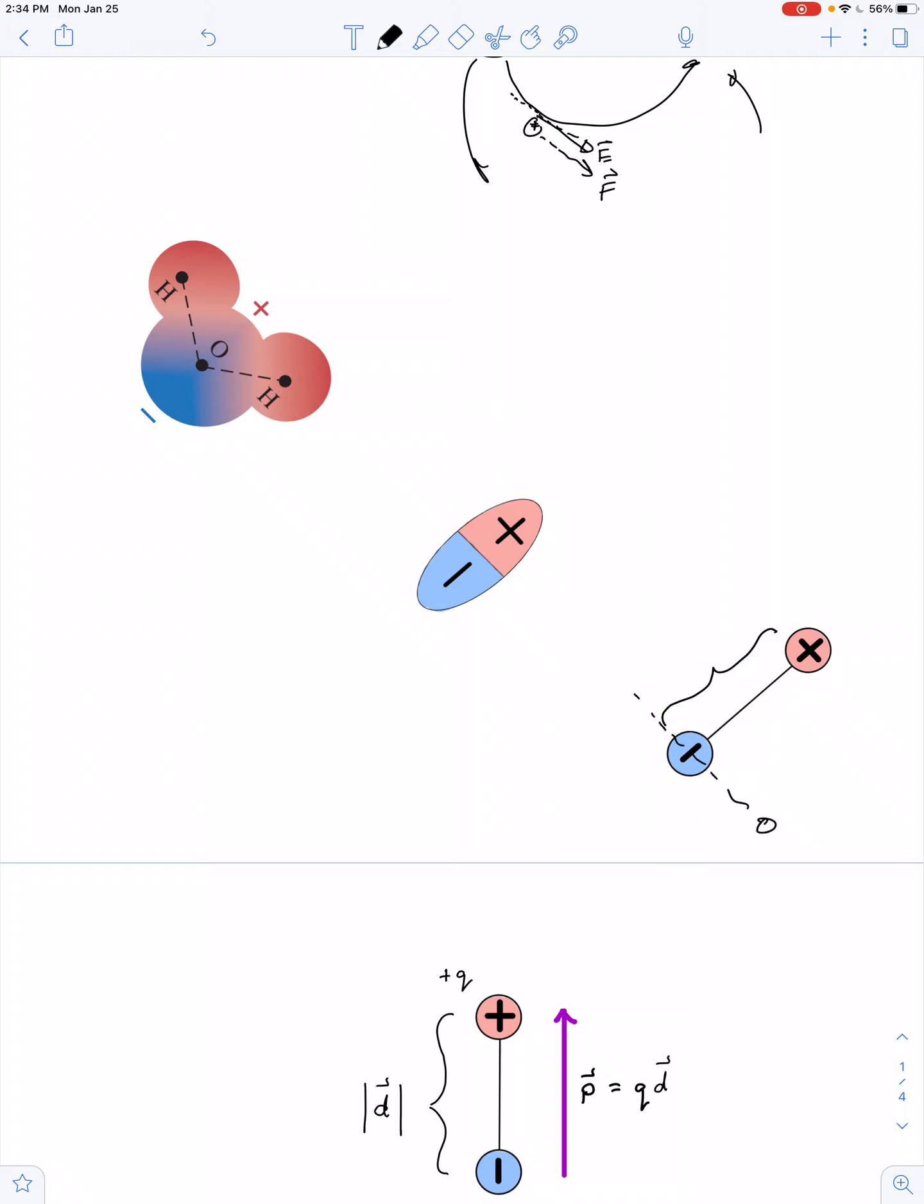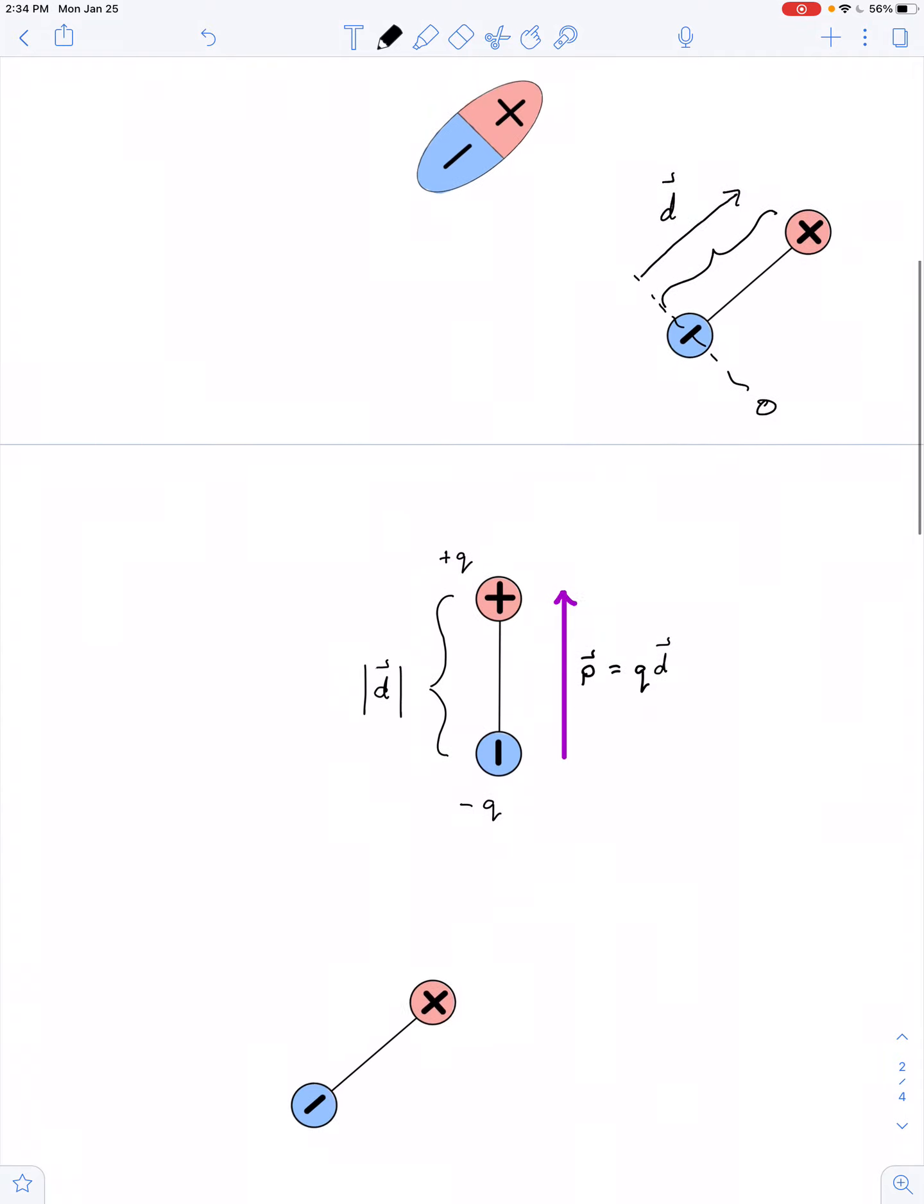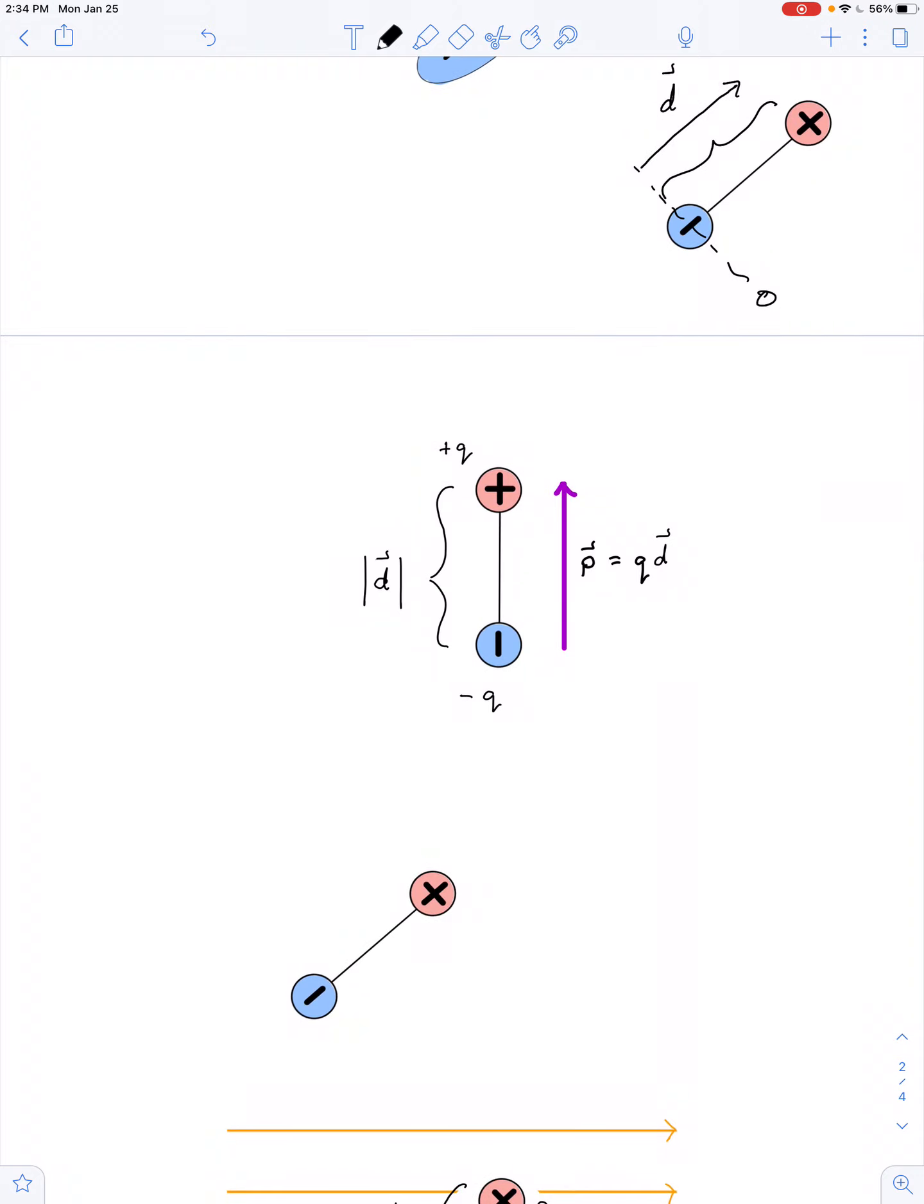And we can even simplify that model more and show that there's a definite overall length or dimension to that polar molecule. So we'll place an origin at the negative charge and create a vector that represents the length of the molecule. So we'll call that vector D. And we can define a new quantity we call the electric dipole moment. So we're going to give that the symbol P. It's nothing more than the product of the charge of either pole, Q, and the length of the molecule, D.